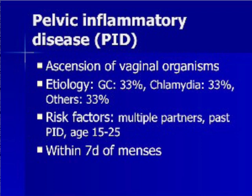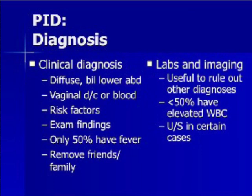Pelvic inflammatory disease, or PID, is a bilateral infection of the upper reproductive tract, specifically the fallopian tubes. It is caused by the ascension of vaginal organisms to the cervix. The most common causes are gonorrhea, chlamydia, and the organisms that cause bacterial vaginosis. Risk factors include multiple sexual partners, a past history of PID, young age, and recent menses. PID is a clinical diagnosis; labs and imaging are only useful to rule out other diagnoses. PID is characterized by diffuse bilateral lower abdominal and pelvic pain associated with either vaginal bleeding or discharge.